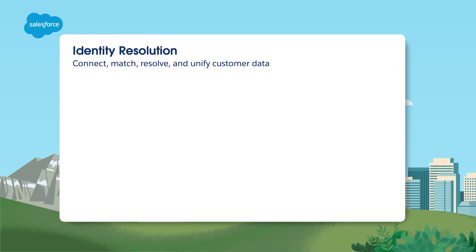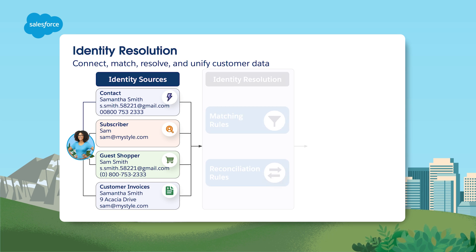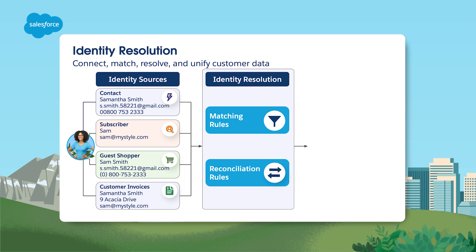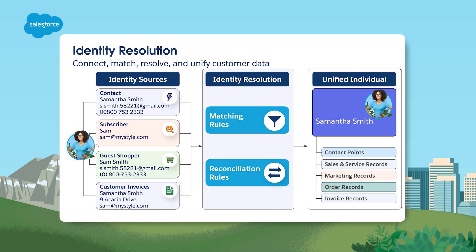You want to create a unified profile in Data Cloud to get an accurate and cohesive view of your customer. You do this by using the identity resolution process with rule sets to match and reconcile customer profiles across different data streams. The goal of this process is to accurately identify, match, and merge records that correspond to the same individual or entity, ensuring that all of the information about the customer is accurate and consolidated for your unified view of each customer.